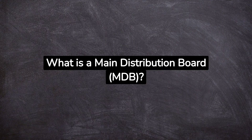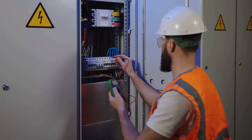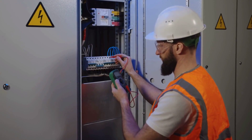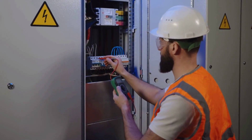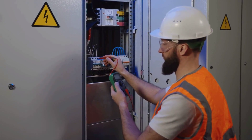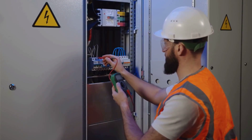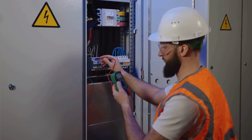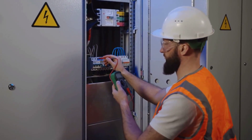What is a Main Distribution Board (MDB)? The Main Distribution Board, MDB, is a distribution board that fulfills all the functions of a main electrical distribution for the supplied area assigned to it, and where the voltage is measured for operating the electric supply system for safety services. The MDB is a low-voltage switchgear installed in a building or its detached part, used to distribute electrical energy between the distribution and final circuits connected to it. By means of the switchgear, control gear, and protective equipment installed in the MDB, the electrical circuits connected to it are protected and controlled. The MDB will also normally provide a main switch, known as an incomer, which switches the phase and neutral lines for the whole supply.